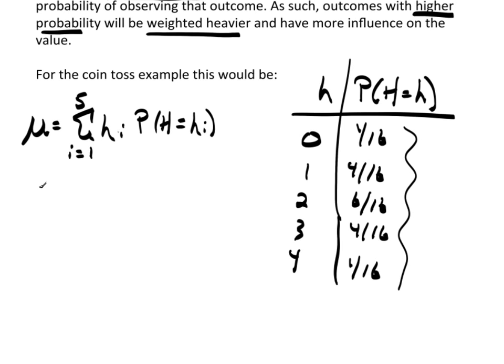So, the first one is a 0. So, this would be 0 times the probability of getting a 0, which is 1/16th. Plus, the next H is a 1. So, it would be 1 times the probability of observing a 1, which is 4/16ths.